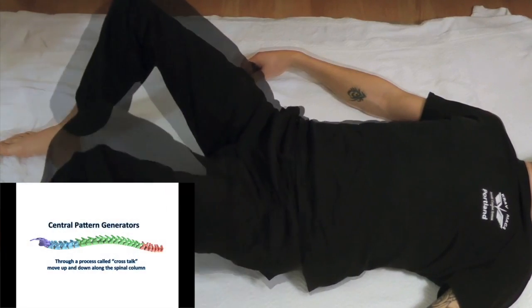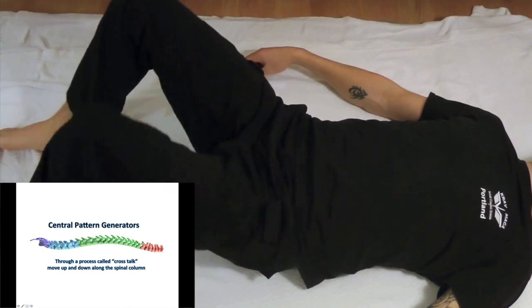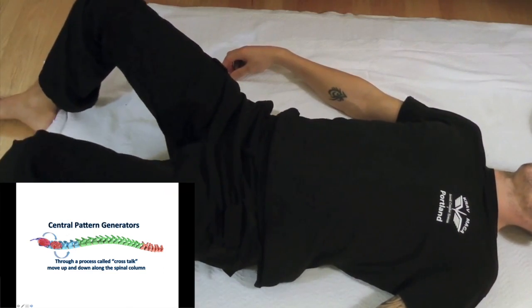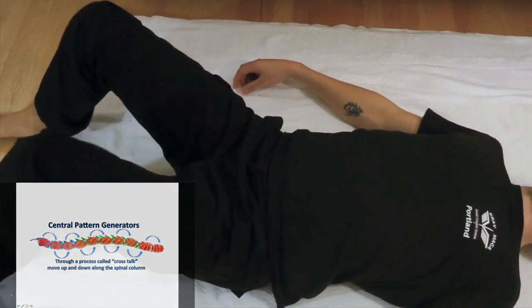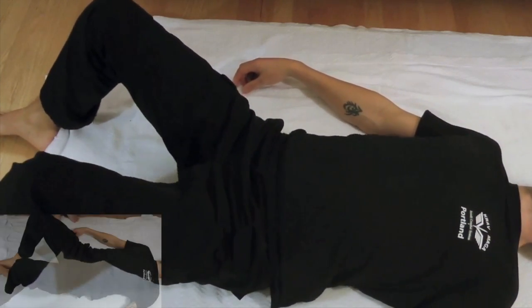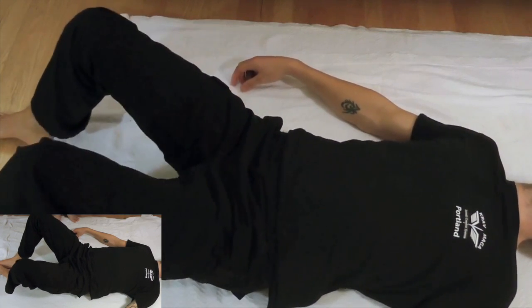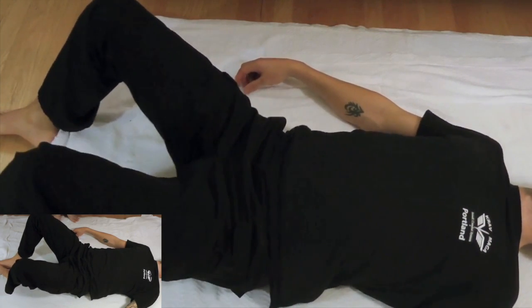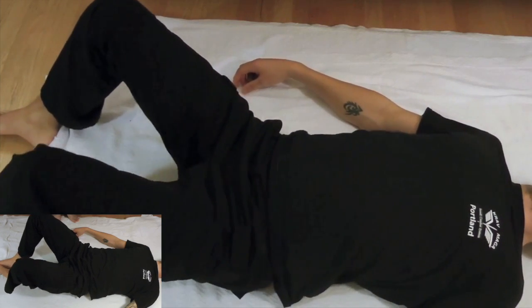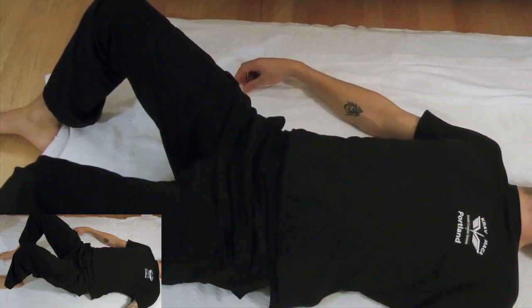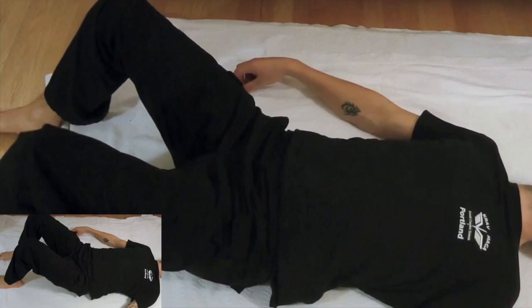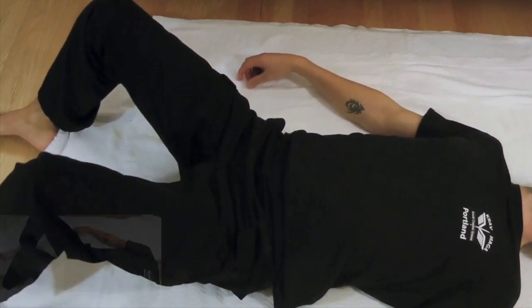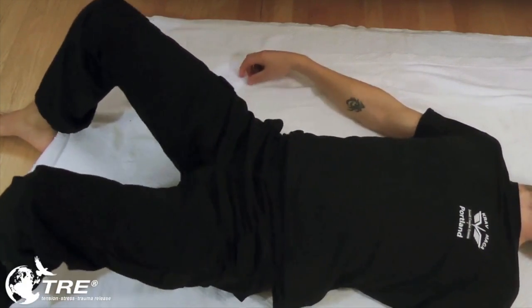Now let's look at this in action. You see it starting in the spine, and the central pattern generators slowly move the tremor mechanism up the spine, all the way up into the neck and the shoulders. Now you can see the comparison between the person whose tremors are only in their legs and segmented in the body, and now the body has reorganized, integrated, and developed a cohesive and fluid wholeness throughout the entire structure.